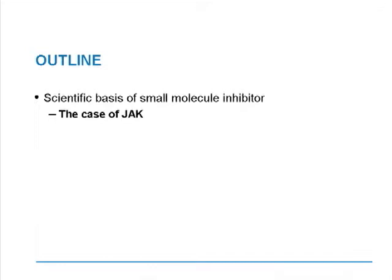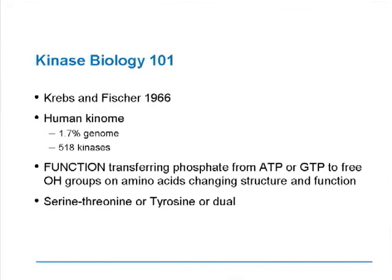The molecules that we'll be talking about today are the JAKs. To get a high-altitude perspective of this, we have to talk about kinase biology 101. It's been literally almost 50 years since Krebs and Fischer discovered that phosphorylation within muscle tissues led to profound metabolic changes, and this ultimately led them to win the Nobel Prize. They described a family of molecules capable of phosphorylating proteins that we refer to as kinases.